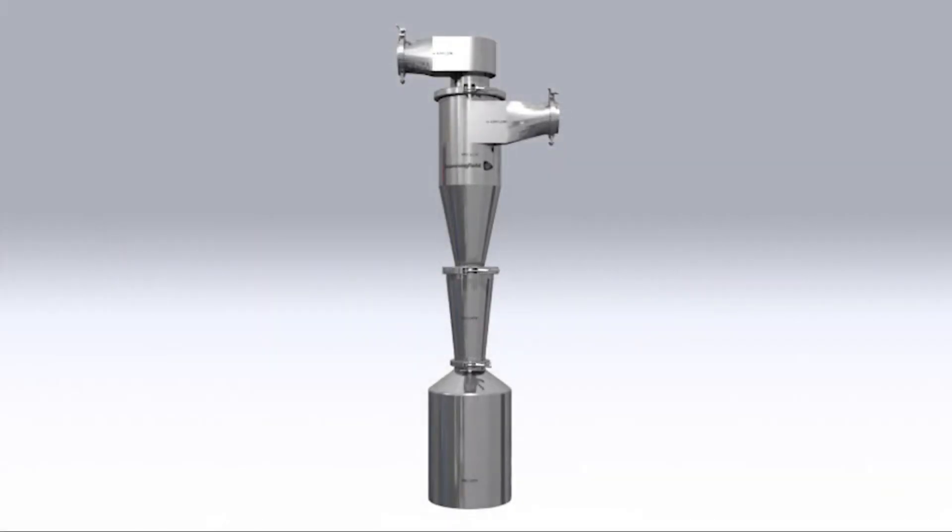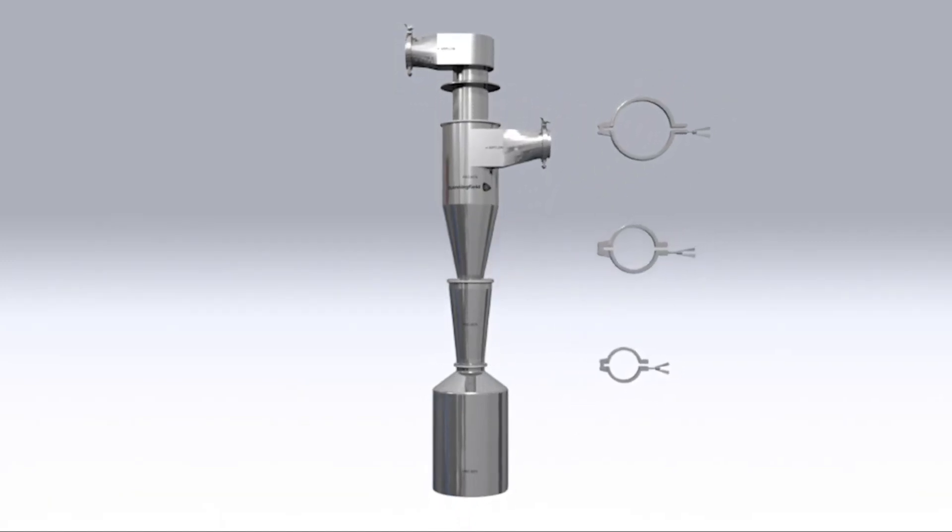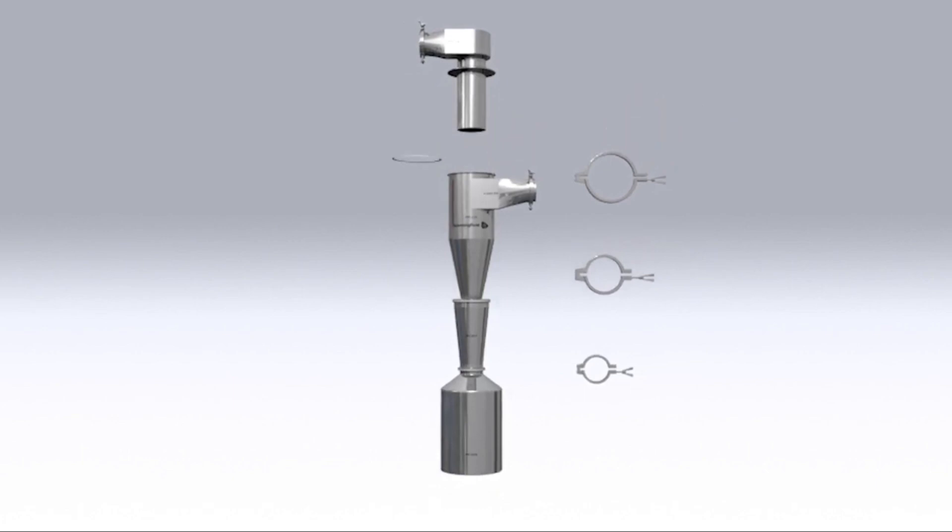The Unidust Cyclone has no filters, no moving parts, and is specifically designed for GMP environments. The unit is constructed from 316L stainless steel, using tri-clover connections for quick dismantling and ease of cleaning.